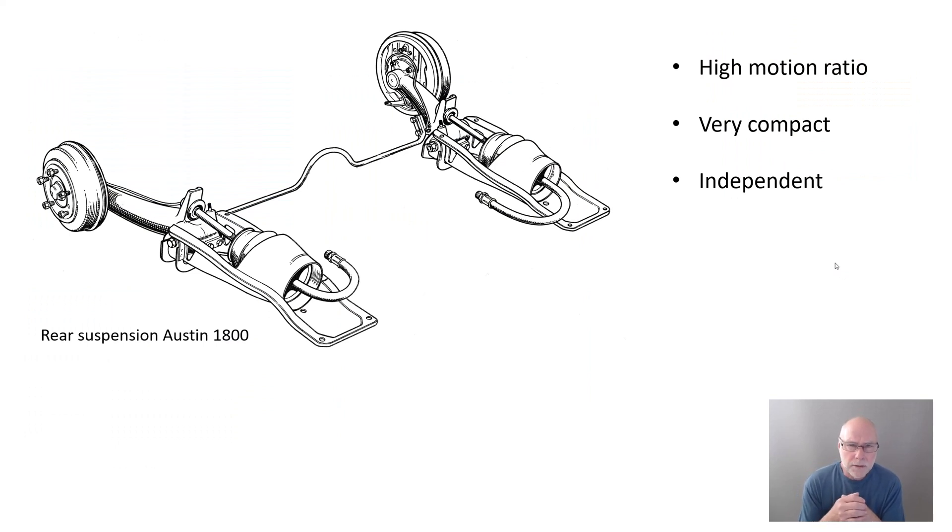Here's the rear suspension of the Austin 1800. It's got a very high motion ratio. That means the spring moves only a small distance in compression when the wheel moves a bigger distance. The hydroelastic 1800 had trailing rear arm suspension. You can see with the length of that part of the lever versus that part, the actual compression of the spring was quite small.